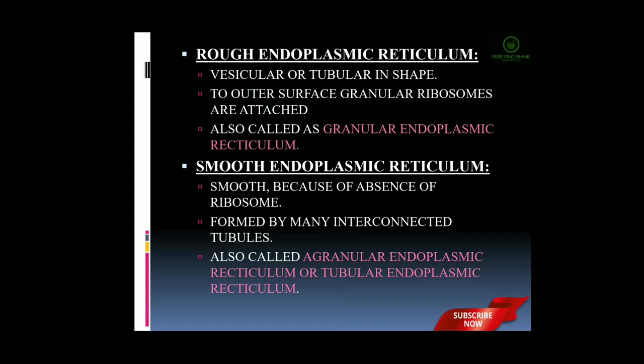Next is the smooth endoplasmic reticulum. The smooth endoplasmic reticulum is smooth because of the absence of ribosomes — it does not consist of any ribosomes on its structure. It is formed by interconnected tubules, so due to the presence of tubules it is known as a tubular endoplasmic reticulum. Due to the absence of granular ribosomes it is also called the agranular endoplasmic reticulum.